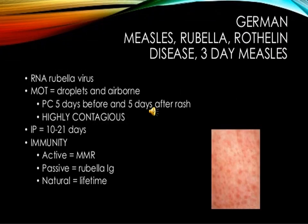German measles, or rubella (three-day measles), is caused by an RNA virus of the Togavirus family. It is characterized by low-grade fever, lymphadenopathy, and a maculopapular rash. Infection in early pregnancy may result in serious congenital defects including fetal death. The classic triad of congenital defects includes deafness, cardiac manifestations, and cataracts, along with glaucoma, retinopathy, microcephaly, cerebral palsy, and mental and motor retardation. Hepatosplenomegaly is also caused by rubella in pregnancy.